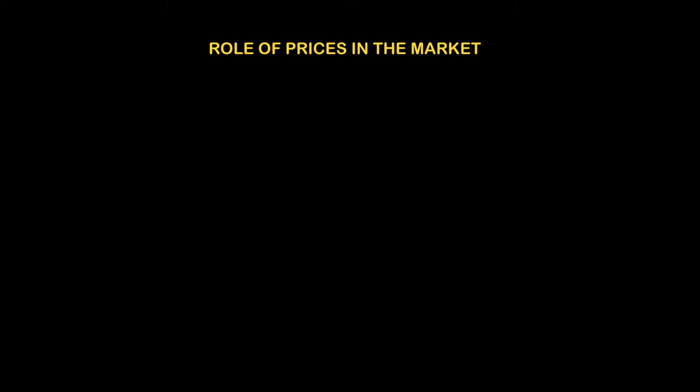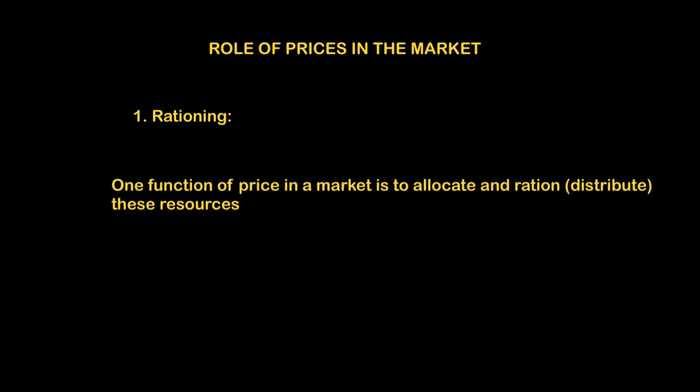In a market, we know that there are buyers and sellers. Buyers are demanding goods and sellers are supplying goods, and this exchange will result in a market price. We say price has three important functions. The first function is that of rationing. Rationing is a function where price in a market is trying to allocate and distribute resources in a market.